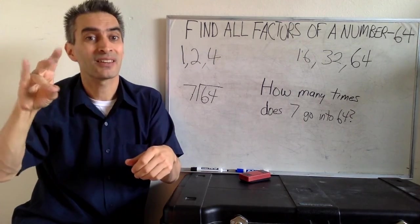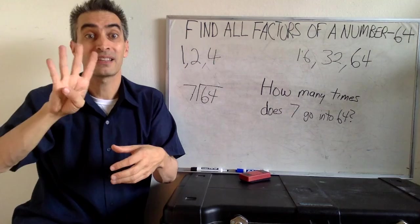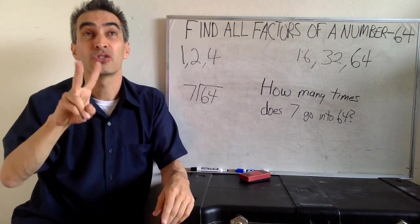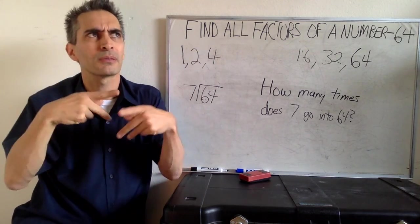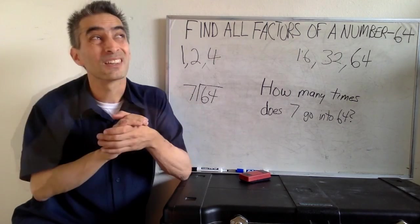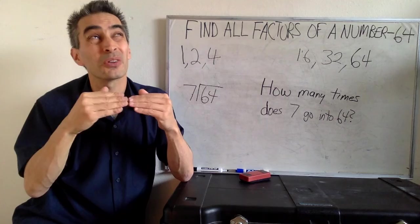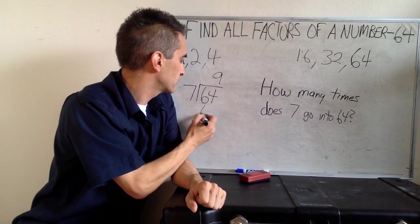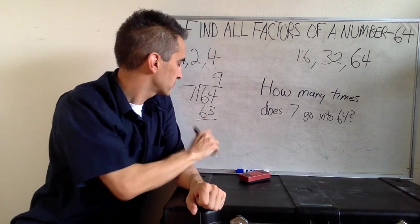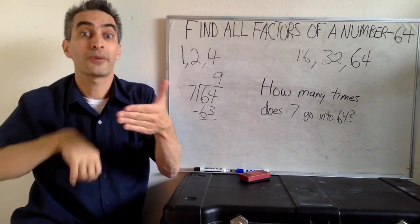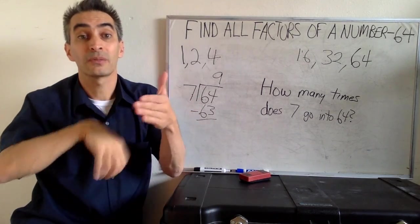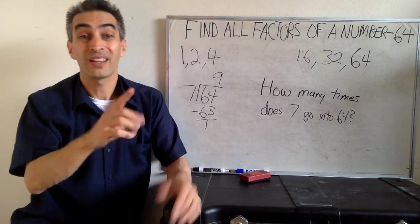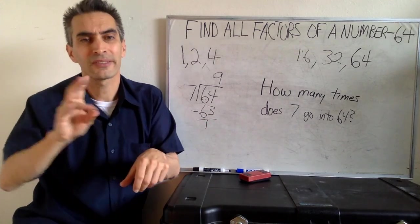Now we're going to try 7. How many times does 7 go into 64? Let's think. 7 times 2 equals 14. 7 times 3 equals 21. 7 times 9 equals 63. Now we're going to subtract. 64 minus 63. And that equals 1. 1 as our remainder means, well, we can't use 7. Shoot.